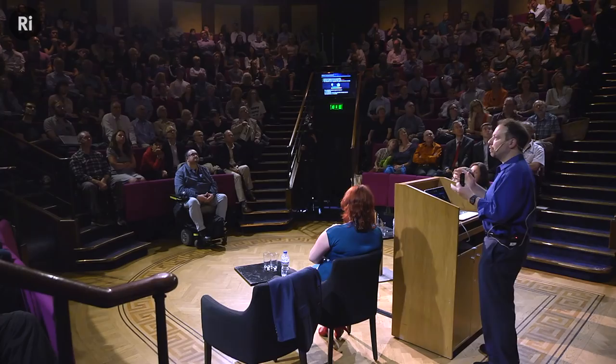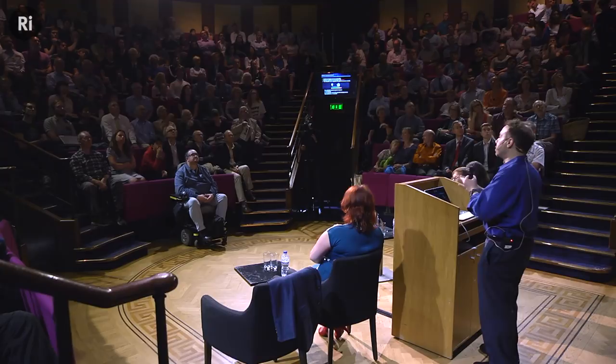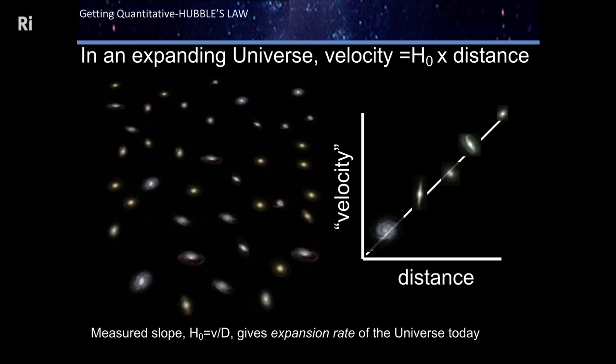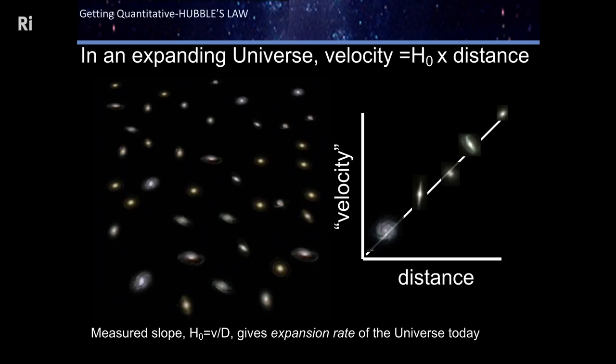So we go out in the universe with our telescopes, we measure the distances, we measure the redshifts, and this becomes a quantitative science. We look at galaxies around us, measure how far away they are, measure how fast they appear to be moving away from us—and the further away they are, the faster they are moving because there's more space. This plot—this graph in cartoon form—is how we measure the expansion rate of the universe. This is known as Hubble's diagram, after astronomer Edwin Hubble, who showed that the universe was expanding in the late 1920s. By measuring the slope of that line, we can tell just how fast the universe is expanding around us today.